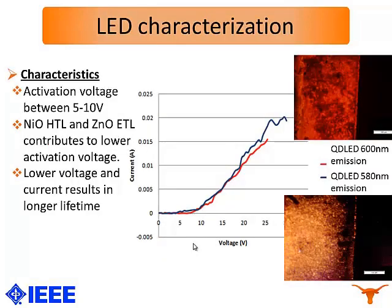The first characterization of our LED that we did was IV curves. We can see the activation voltage due to the aluminum oxide layer and the spin coating of the zinc oxide. The activation voltage is quite low, between 5 to 10 volts, and the current levels are also very low. Because of this, the LEDs do not heat up too much, which causes them to last for a longer time. We created LEDs with two wavelengths: 600 nanometers on the top and 580 nanometers on the bottom.